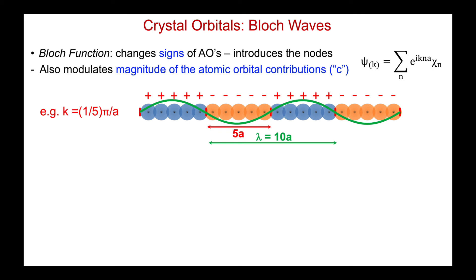The key point is that this Bloch function — the function representing our crystal orbital wave function, often called Bloch waves — changes the signs of the atomic orbitals and introduces nodes into the wave function. But it also modulates the magnitude of those atomic orbital contributions — the c's. For the example at k = (1/5)π/a, with five pluses and five minuses repeating, and nodal planes separated by 5a establishing a wave with periodicity 10a, the equation of this wave is the e^(ikna) function, which successfully modulates both the signs and the magnitudes.